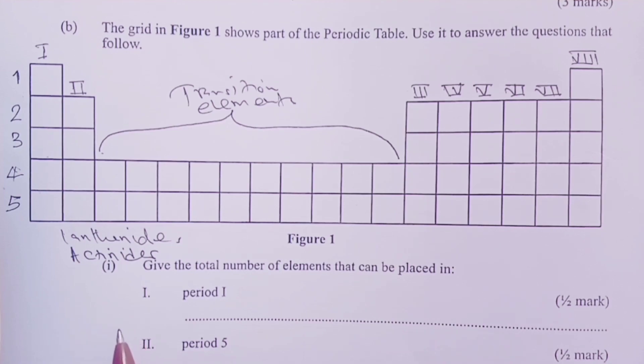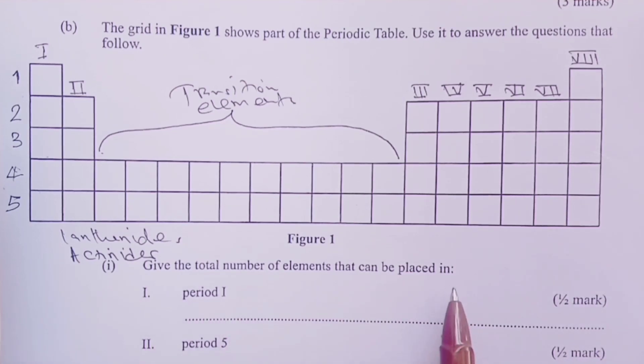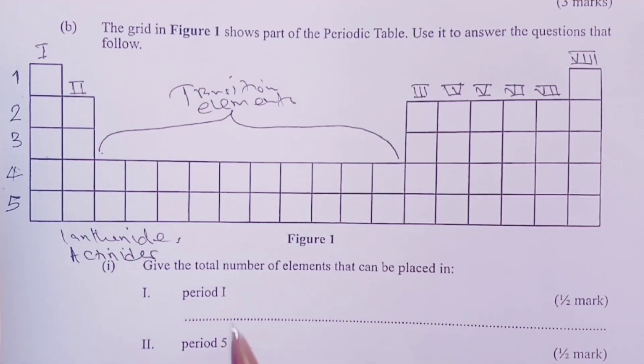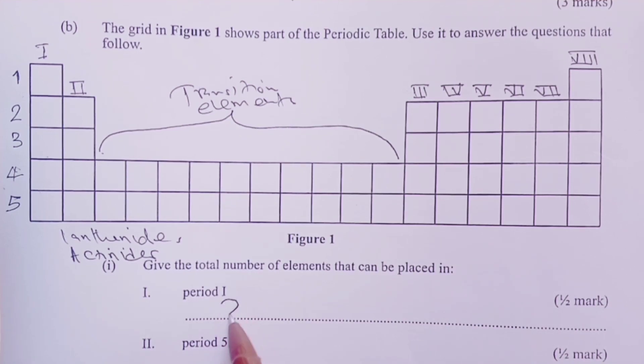Question 1 part B Roman 1: Give the total number of elements that can be placed in period 1. Period 1 is here, we only have 2 elements that can be placed for a half a mark.